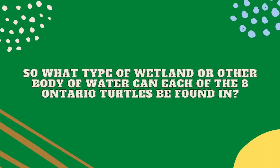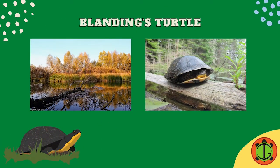So, what type of wetland or other body of water can each of the eight Ontario turtles be found in? Blanding's turtles are semi-aquatic, meaning they like to spend time both on land and in the water. They like to live in large shallow ponds and marshes. You can also find a Blanding's turtle in creeks with soft bottoms.